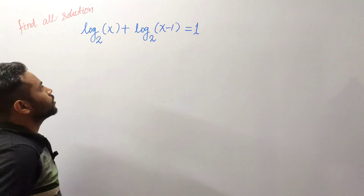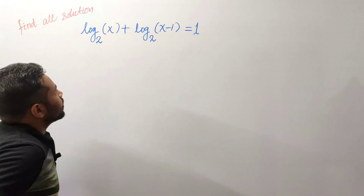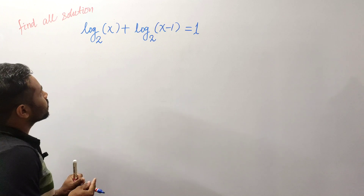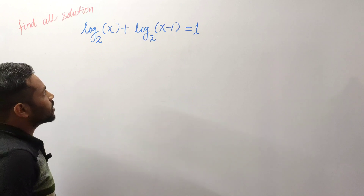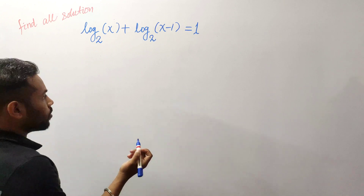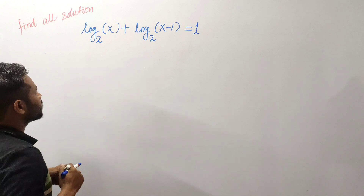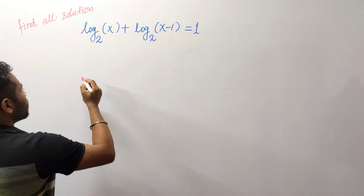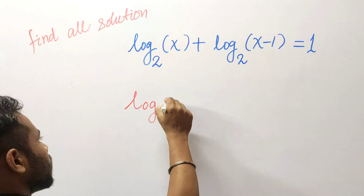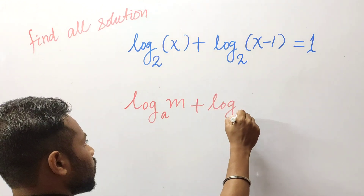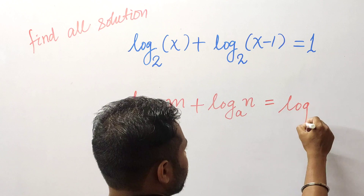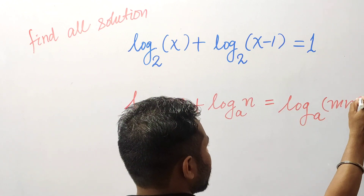Let's see how we can find out all solutions. We are going to use some identities. The identity involves log base x and x minus 1. Clearly, one identity says that if you have the same base, log_a(m) plus log_a(n), then you can write them as log_a(m into n).